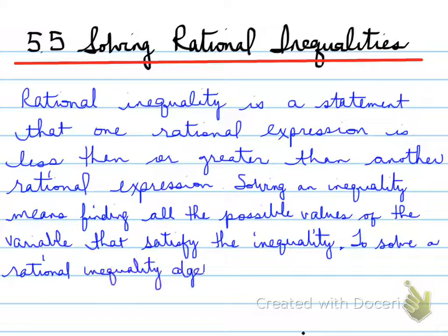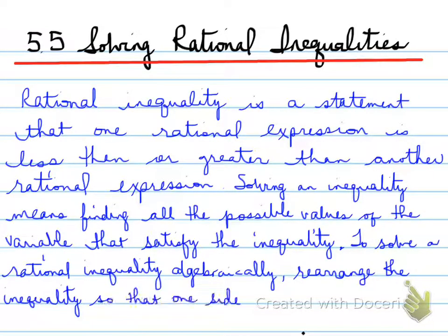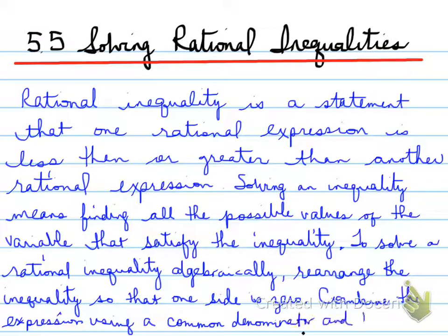To solve a rational inequality algebraically, you're asked to rearrange inequalities so that one side is zero. That's exactly what we did in 5.4, which we're going to stay consistent with and continue on with 5.5. You're to combine the expression using a common denominator and then finally use a table to determine which intervals make the inequality true. So that's where it's different from the previous section. In the previous section we talked about it being equal to zero. In this case, what we're trying to do is comparing it against zero to find out whether it's greater than zero or less than zero.